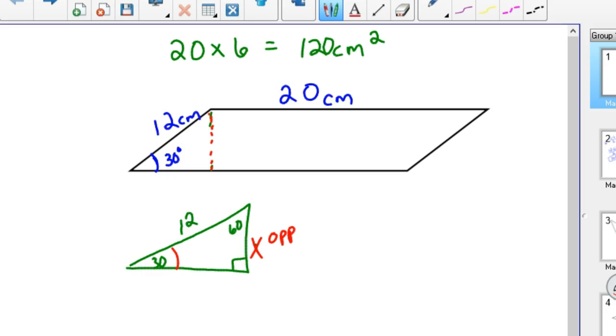So, and we want to find the opposite, we're given the hypotenuse. Well that's the sine one. So sine of 30 equals opposite over hypotenuse, x over 12.